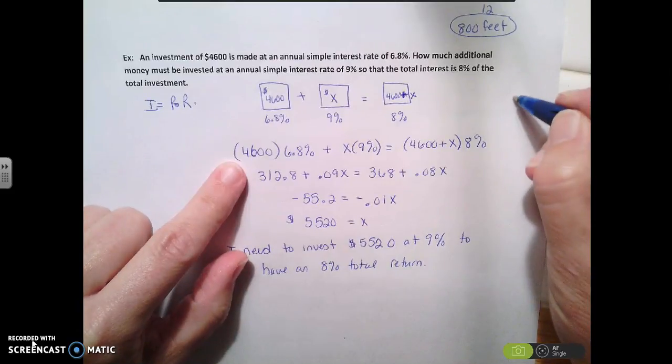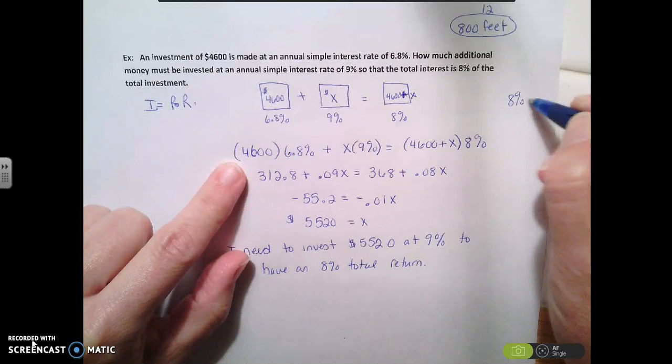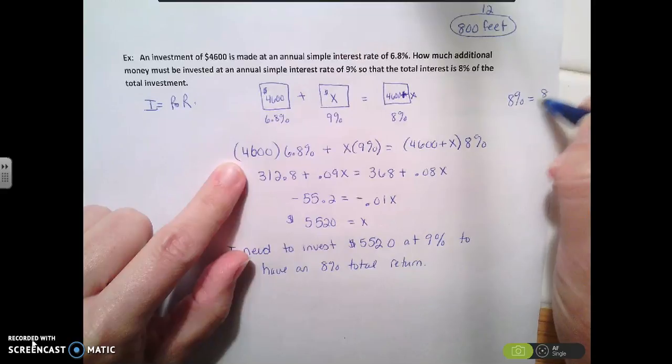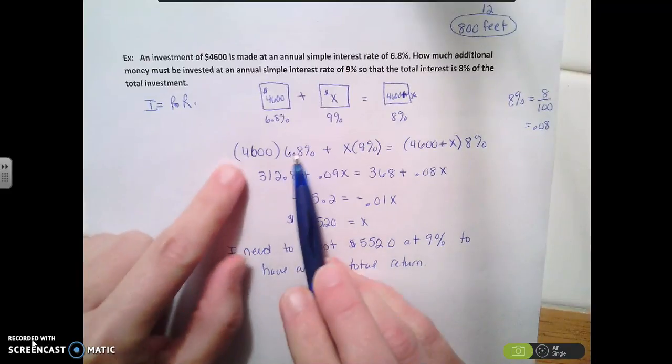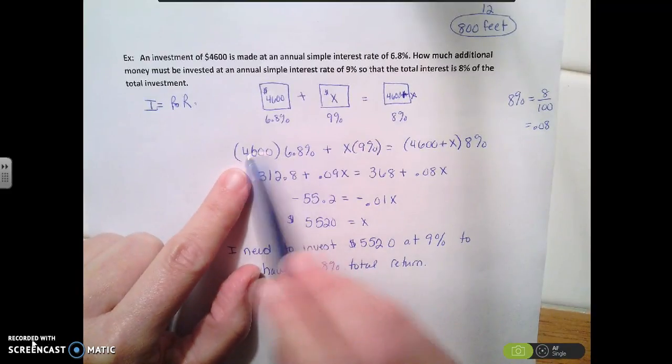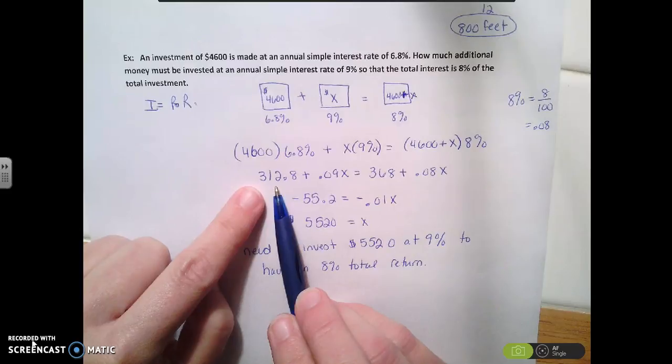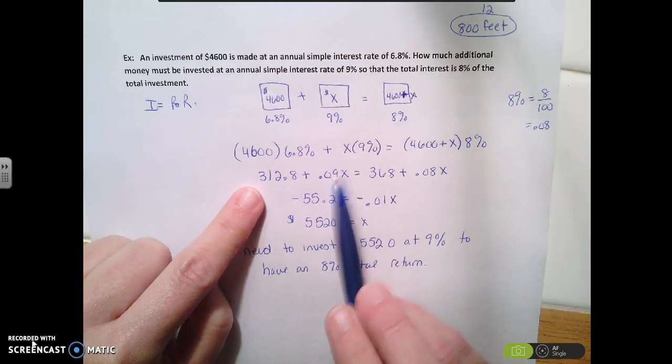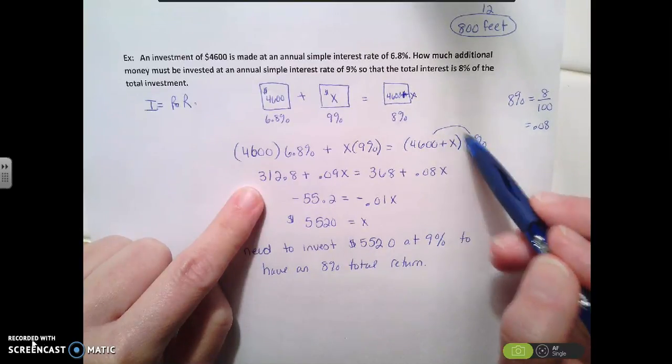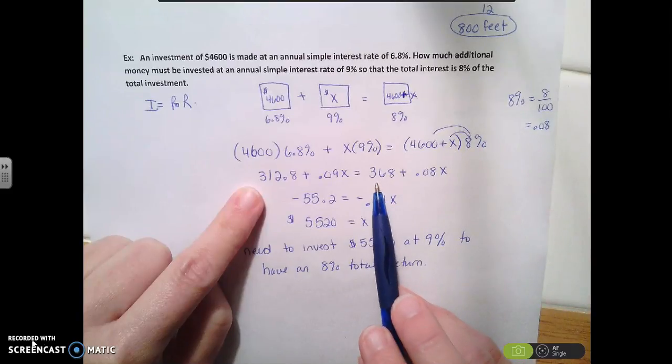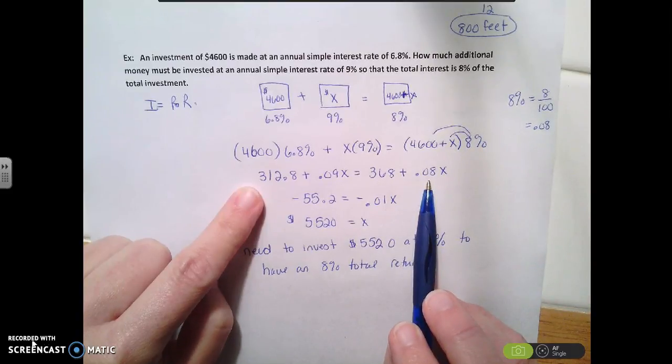So remember to treat a percentage, to work with a percentage, 8% is the same thing as 8 over 100. Or it's the same thing as 0.08. So I'm going to take the 6.8% and multiply it here, and I get $312.80. I'm going to multiply this and get 0.09X. And then I'm going to distribute this 8% to both of these, and I get 368 and 8% X.